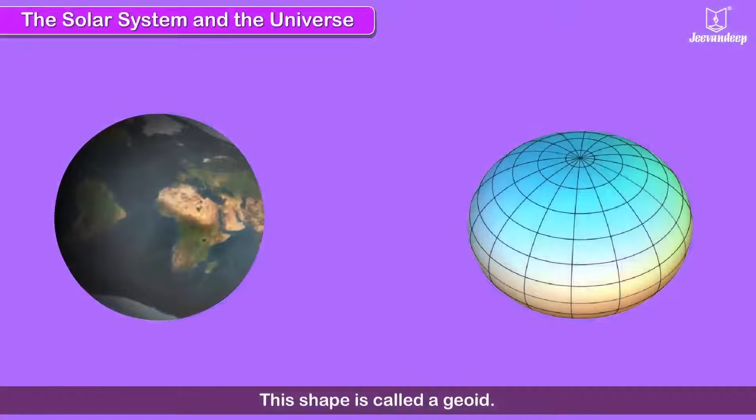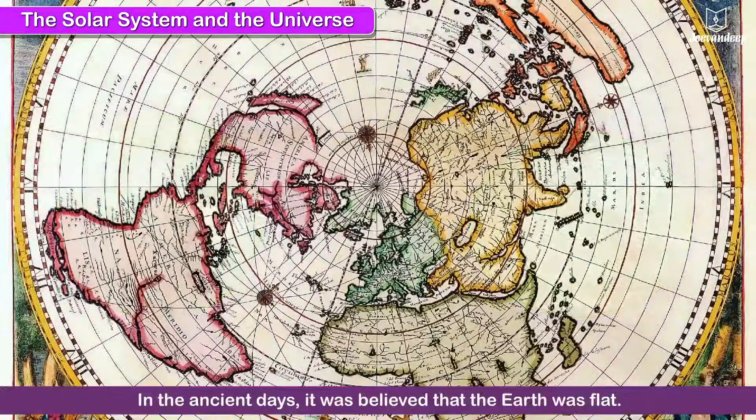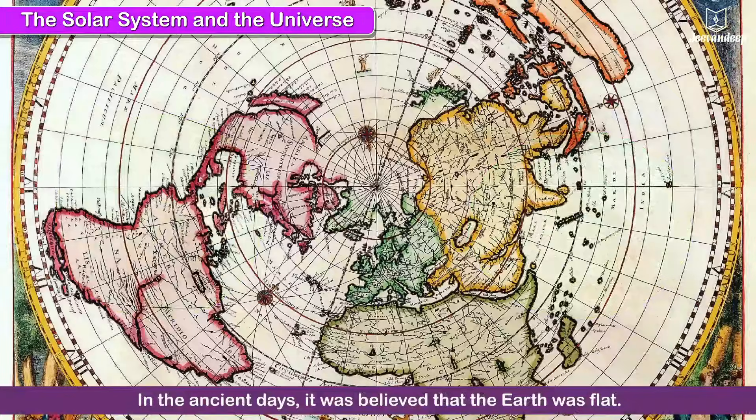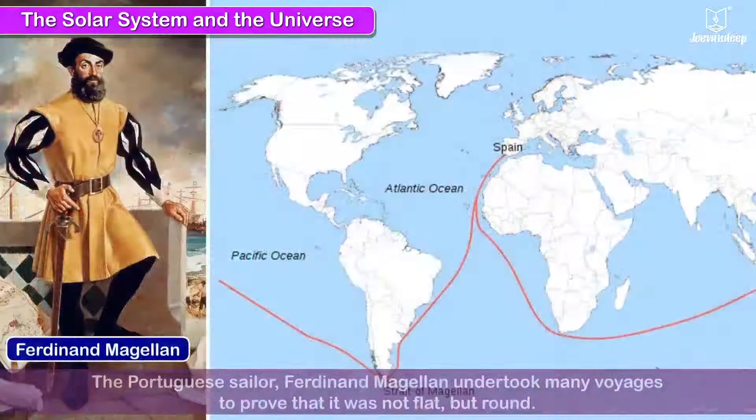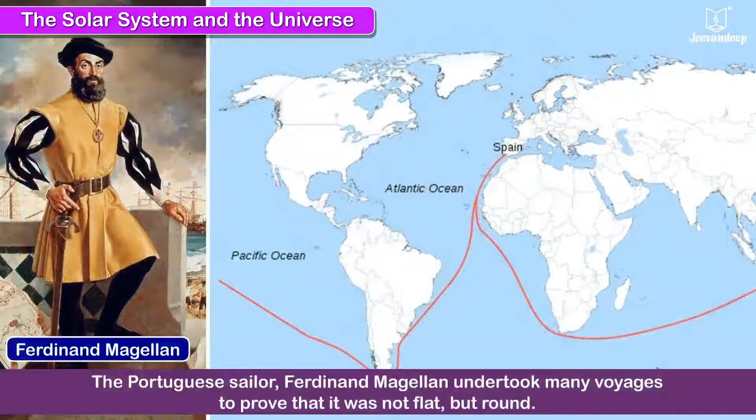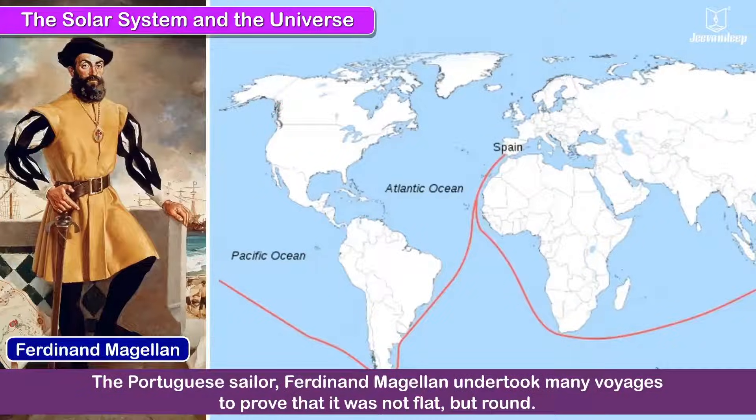This shape is called a geoid. In the ancient days, it was believed that the Earth was flat. The Portuguese sailor Ferdinand Magellan undertook many voyages to prove that it was not flat but round.